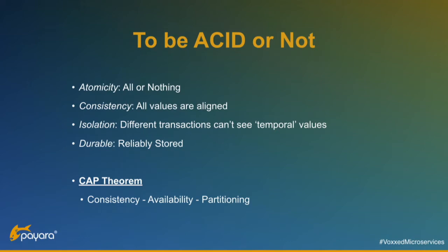That's a very good thing, but there is one catch: the CAP theorem. You have consistency, availability, and partitioning. It has even been proven mathematically — from those three principles, you can only have two at the same time. So if you have partitioning, like in a microservice environment, you have to give up either consistency or availability. There is no way around it.